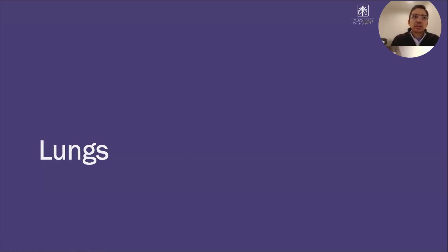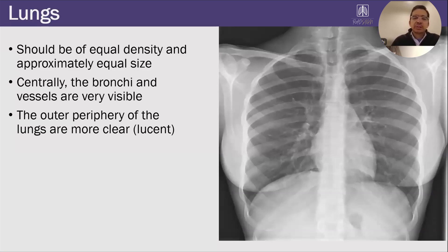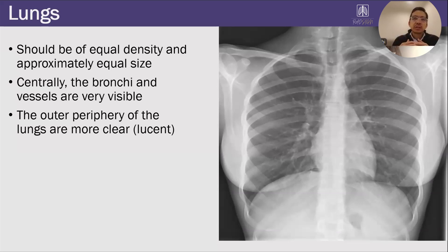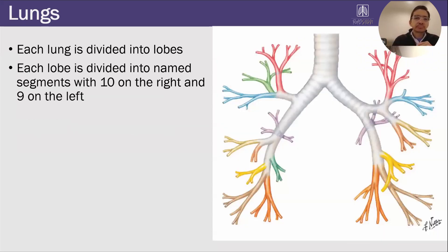And then finally we're going to look at the lungs. The way I look at the lungs is they should be about equal size and density. Because the structures in the lungs branch and get smaller as you go out, centrally you're able to see the vessels and sometimes the bronchi, but peripherally in the peripheral third of the lungs, you really shouldn't be able to see anything — it should be pretty lucent. Each lung is divided into lobes, and then each lobe is divided into named segments — 10 on the right and nine on the left.